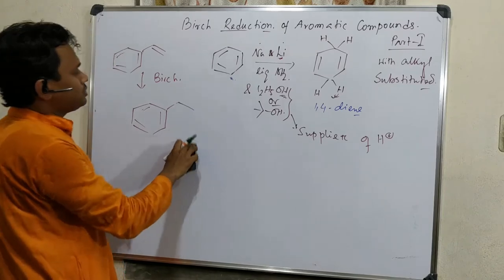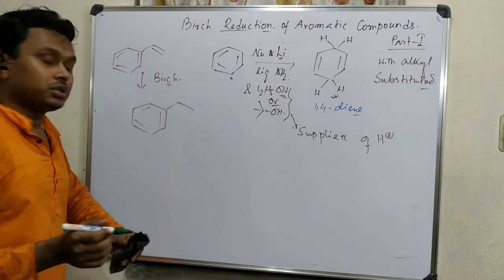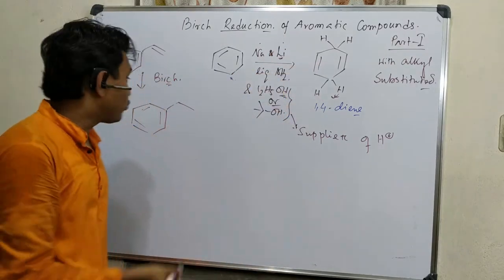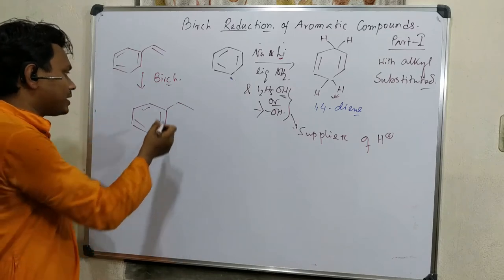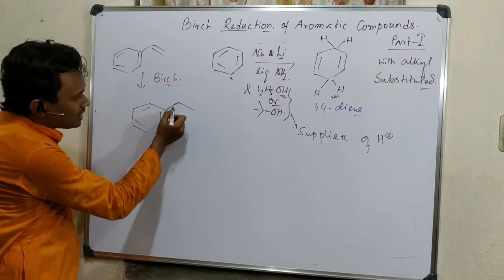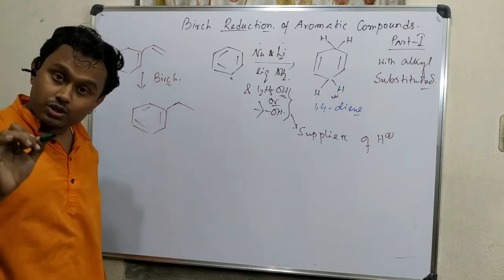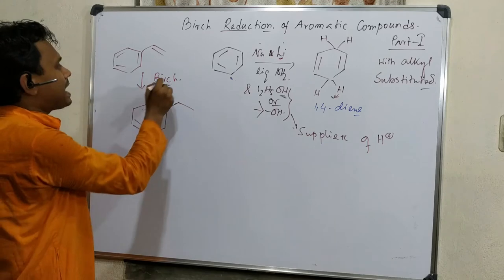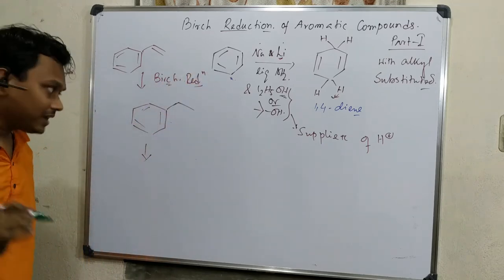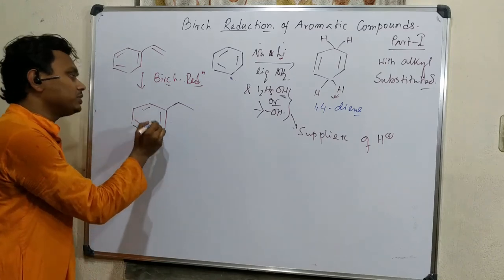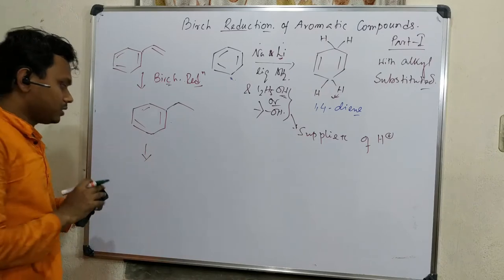We have observed that this produces a conjugated double bond. Now we may have a question: whether the benzene is reduced to a 1,4-diene, and what about this double bond that is already present as an electron-donating group? Actually it should also be reduced, but if we add a limited amount of reagent, the reaction will stop at the aromatic ring reduction. So it is possible to selectively obtain this product using controlled Birch reduction.